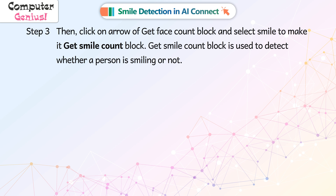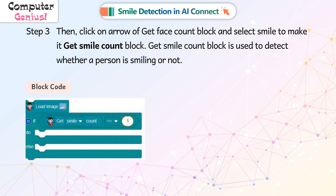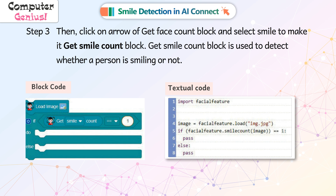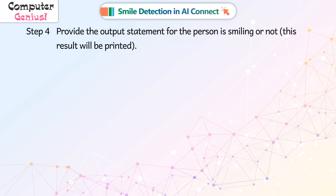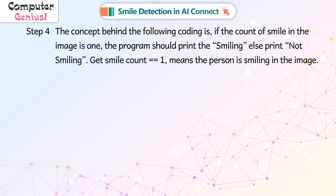The get smile count block is used to detect whether a person is smiling or not. Step 4. Provide the output statement for whether the person is smiling or not — this result will be printed. The concept behind the code is: if the count of smile in the image is 1, the program should print smiling, else print not smiling.